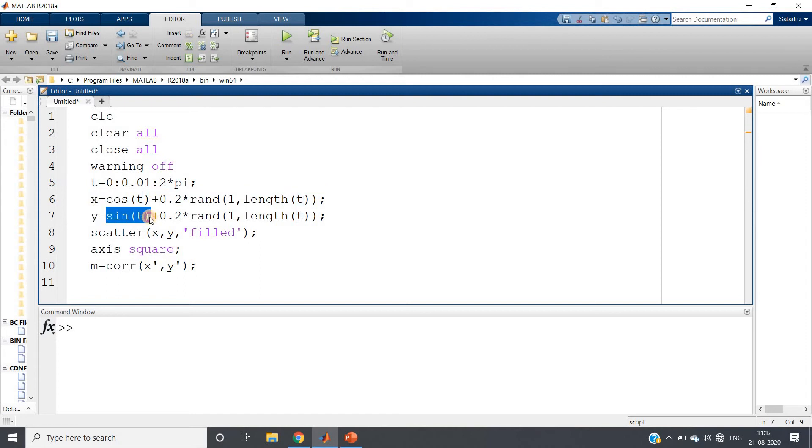Then I am adding some noise in it using rand function, and then I am plotting this scatter plot with filled circles and giving axis square. And then I am calculating correlation coefficient. Point to be remembered: in case of calculating correlation coefficient using corr function, that is if you don't want to implement the whole code from scratch, that is inbuilt function in MATLAB. In that time you need to give argument as column. So x I am taking transpose because x is basically row vector, and same goes for y.